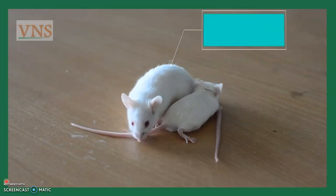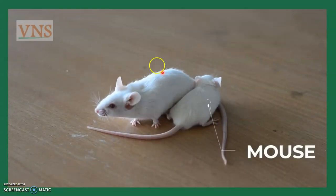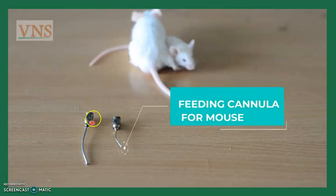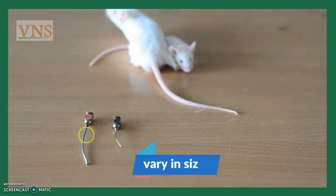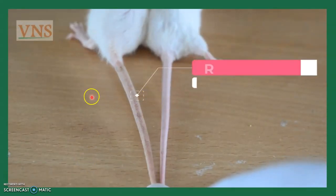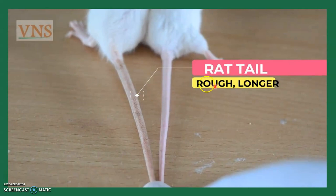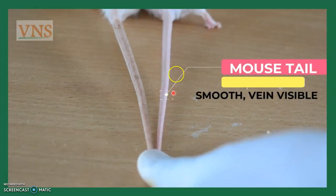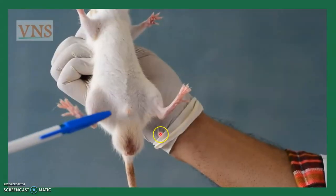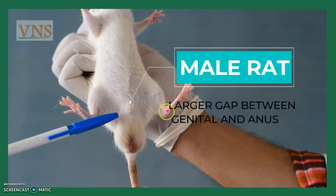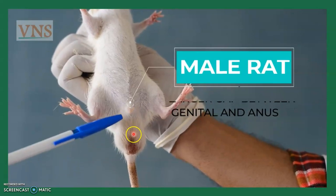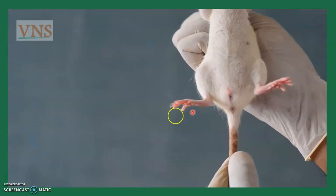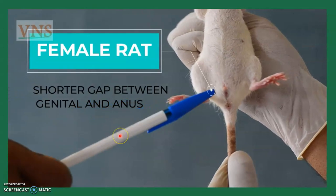How to differentiate between a rat and a mouse: observe the tail and head ratio. Small needles are used for mice and large needles for rats. Rat tails are rough and longer, while mouse tails are smooth with visible veins. For gender identification: in male rats there is a larger gap between the anus and the reproductive organs, while in females this gap is small.